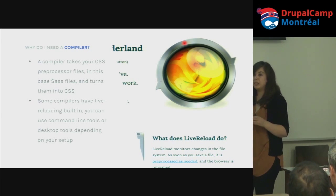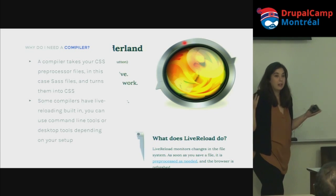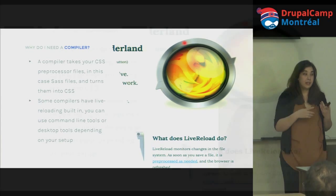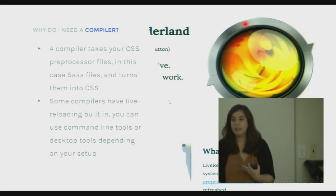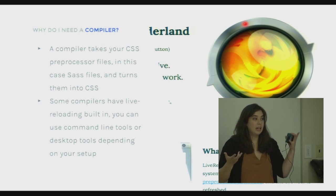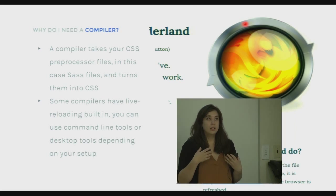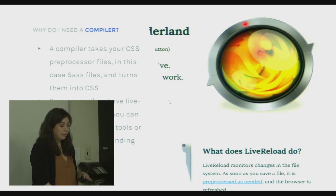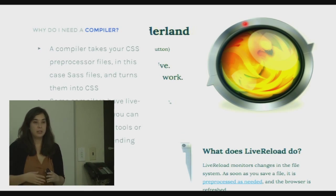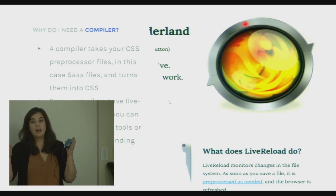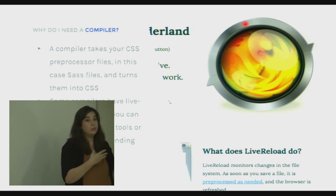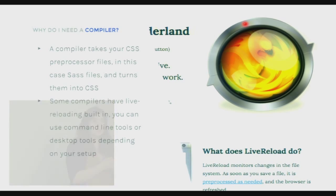Some compilers have live reloading built in. Live Reload was one of the first compilers in this space — it compiles CoffeeScript, Sass, Less, Stylus, and other languages. It's a GUI app with Grunt plugins and Ruby gems as well. Essentially it helps compile Sass files and also auto-refreshes and reloads the newly compiled styles into your browser, so you don't have to manually refresh each time you want to see changes.